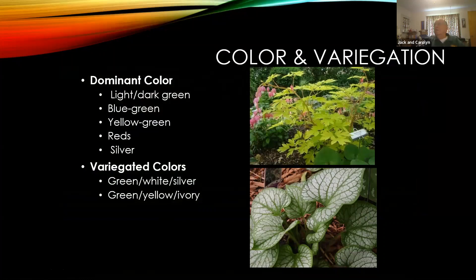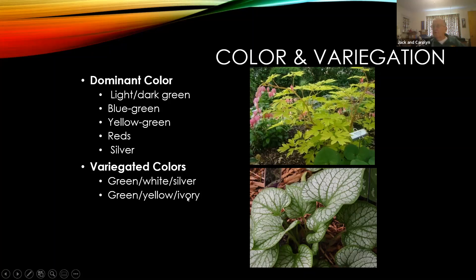Color and variegation: sometimes a leaf which is uniformly one color works great. Bleeding heart with its pale yellow-green color in a garden with darker green leaf plants — especially if leaves are different size and shape — gives you great contrast. You can also have leaves with variegated colors, like Jack Frost Brunnera, with colors ranging from green to white to silver, or green to yellow to ivory. There are a lot of hostas with variegated colors you can take advantage of, giving you eye-catching interest in the garden.